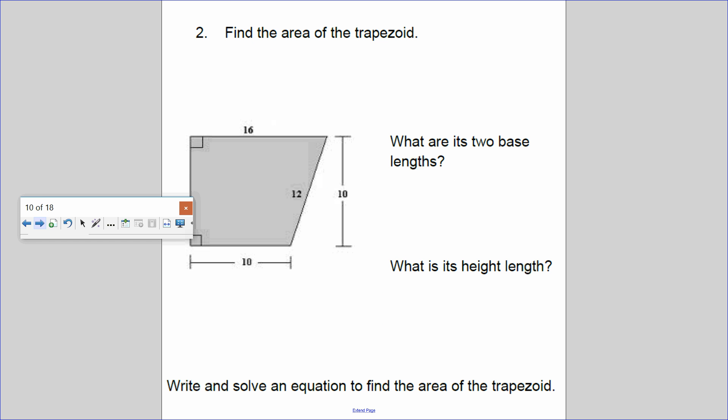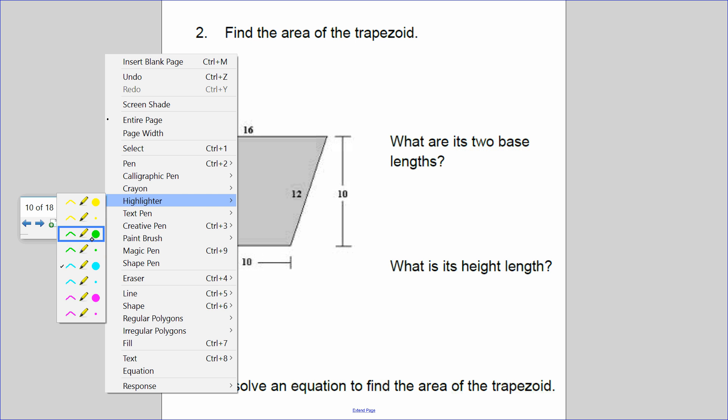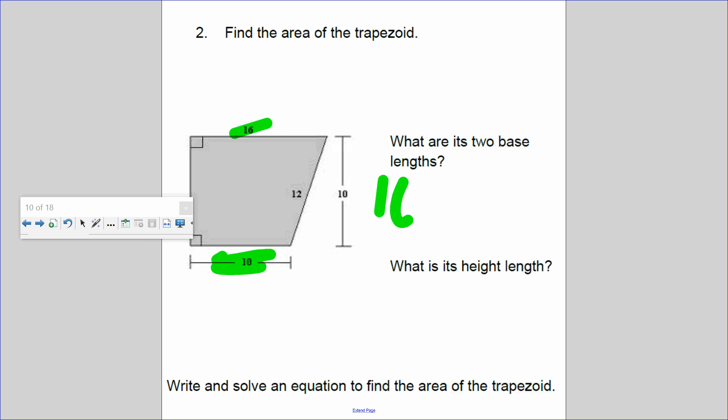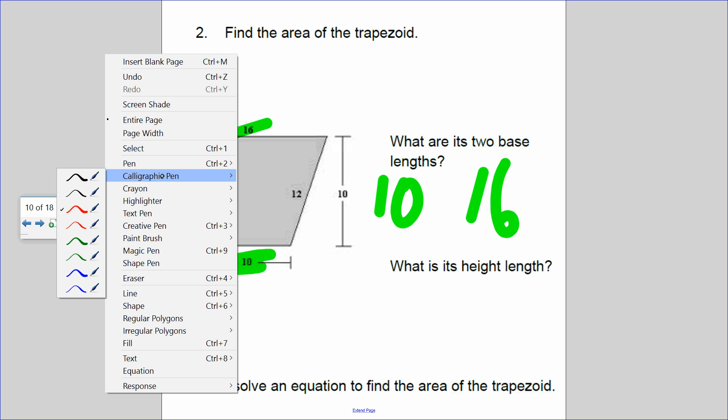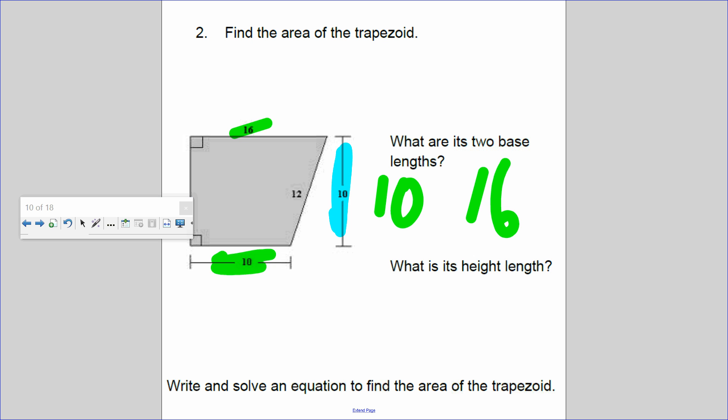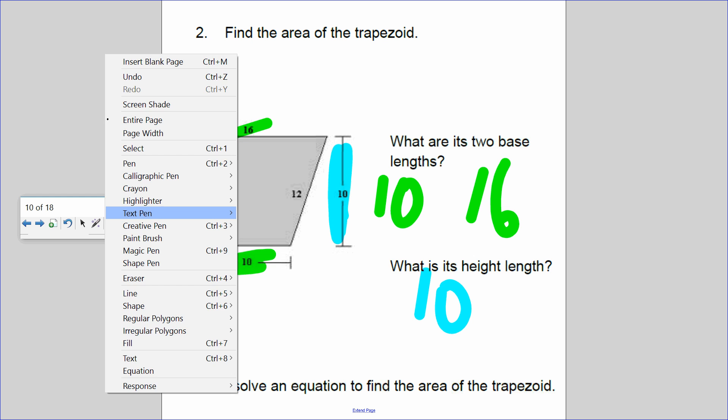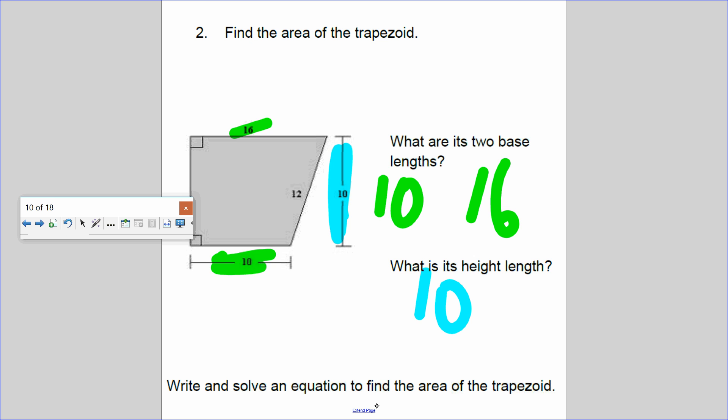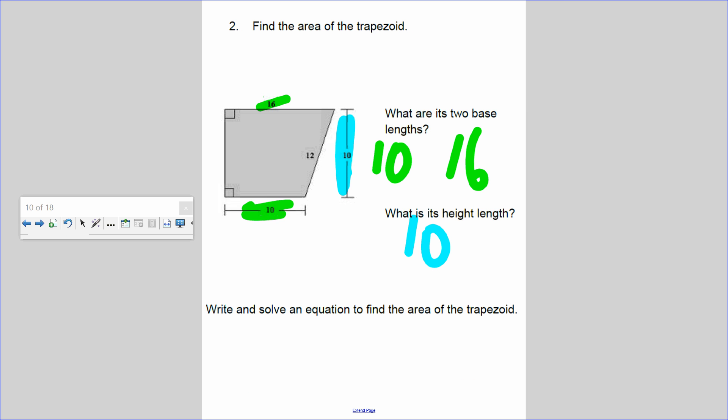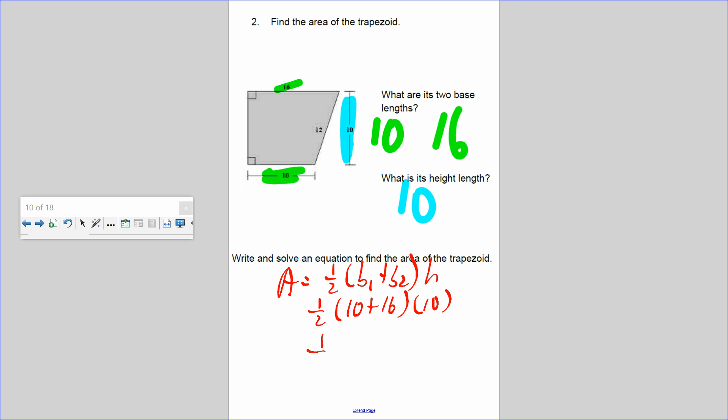Let's try another example. What are the two bases? Let me get my highlighter. The two bases are 10 and 16. The height of this is completely vertical, so it's 10. Write and solve an equation to find the area of the trapezoid. So area equals half of the bases, sum of the bases, times the height. The two bases are 10 and 16, the height is 10. If you add up the bases, you get 26, and the height is 10.